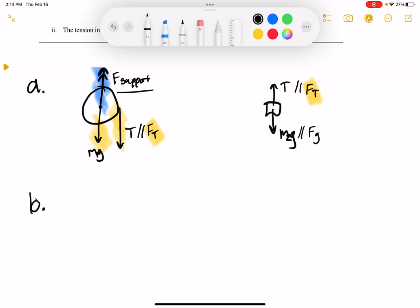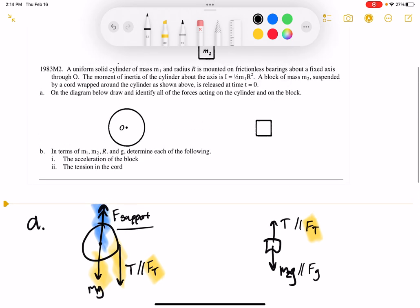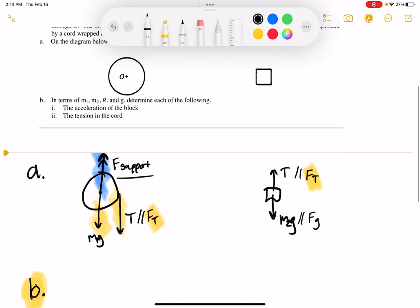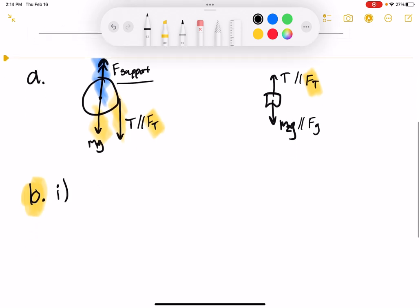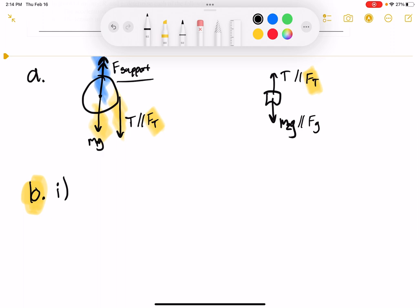You could label it something else, and that should be fine as long as it's something that makes sense. You wouldn't want to label it a tension or a normal force or something that we already have defined, just as some sort of force that's supporting it. Okay, let's go ahead and look at part B. Okay, part B. So it says, in terms of M1, M2, R, and G, determine the following: the acceleration of the block. Okay, so I need to find the acceleration of the block. Well, normally if you ask for acceleration, what do you want? What are you going to do to solve for acceleration? Hopefully, you go back to your physics toolkit and say, acceleration, that would be forces.